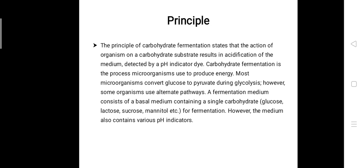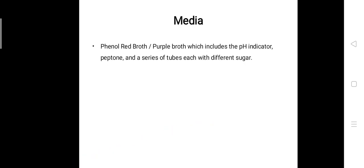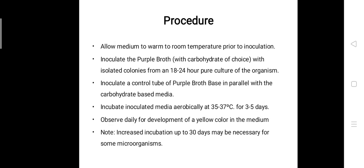If the test organism does produce gas, the gas displaces the media present inside the Durham tube and gets trapped, producing a visible air bubble. Phenol red is commonly used as a pH indicator in the carbohydrate fermentation test. The media used here is a phenol red broth or purple broth, which includes the pH indicator, peptone, and a series of tubes each with a different sugar.